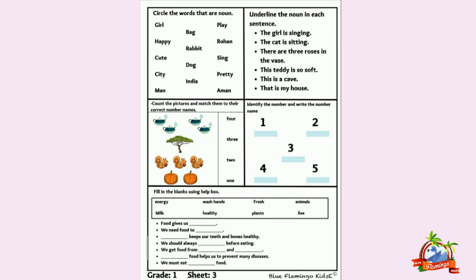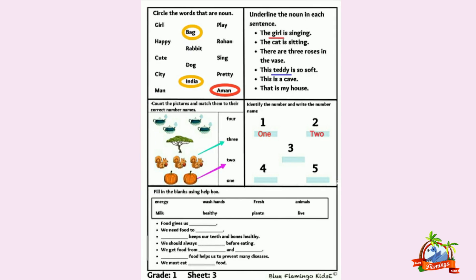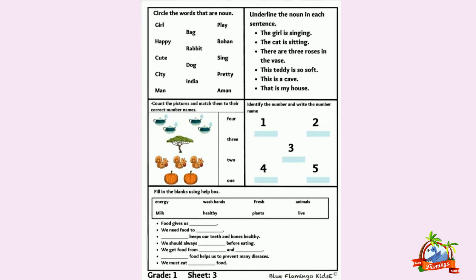Sun, moon, star, humans, animals, insects — everything is a noun. Pen, pencil, eraser, sharpener, table, chair — everything is noun.